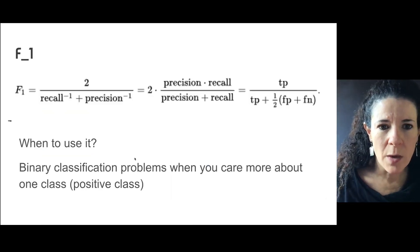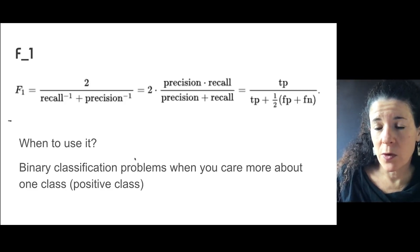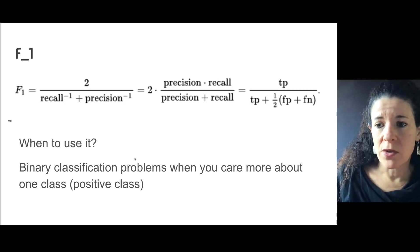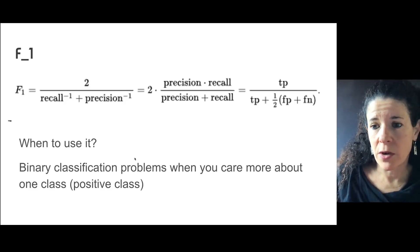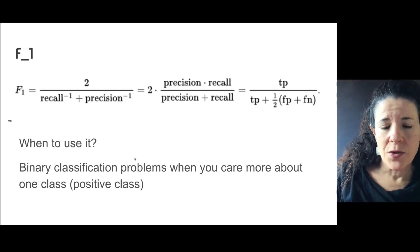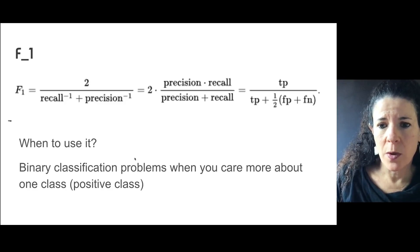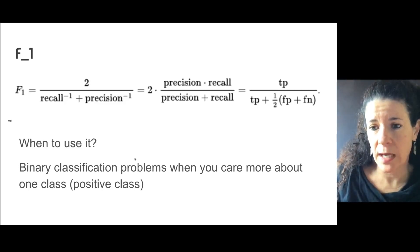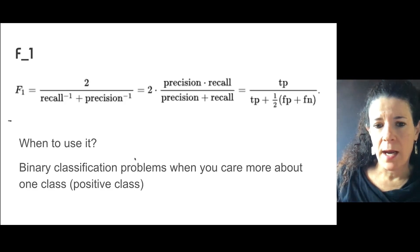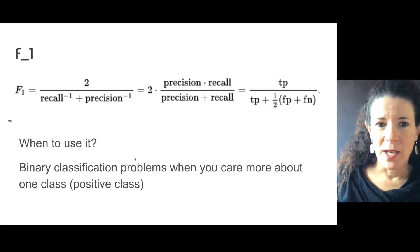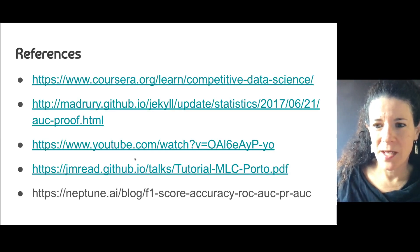Finally, there are many metrics for classification and people use different ones for different problems. The F-score — particularly F1 or F2 — is a combination of precision and recall. It is commonly used in binary classification problems when you care more about the positive class than the negative class. This concludes this part of the lecture — see you in the next video.